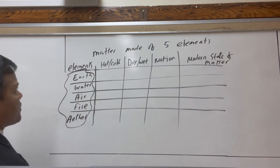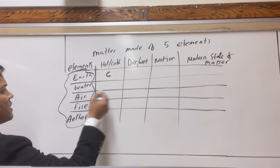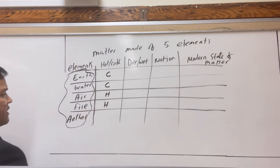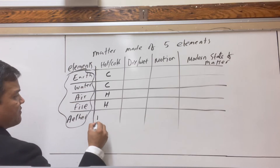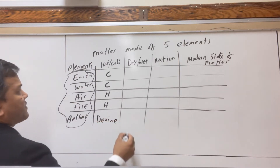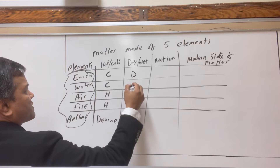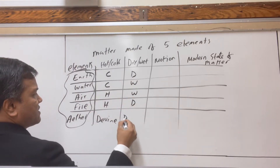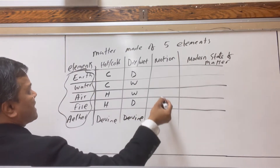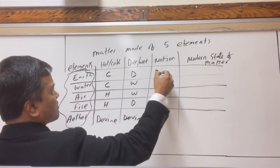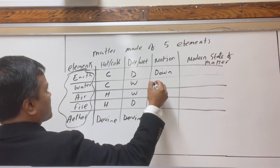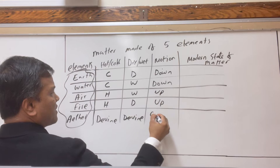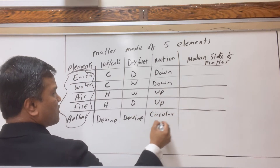According to Aristotle, earth is cold and dry, water is cold and wet, air is hot and wet, fire is hot and dry, and ether is divine. The natural motion of earth is down, water is down, air is up, fire is up, and ether moves in a circular motion around heaven.